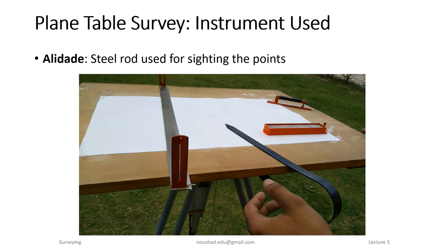This is the station. This is the sighting point. This is the Alidade. This is the slit. This is the thread — the hair line of sighting. This is the scale line, used as the sighting line along the Alidade.